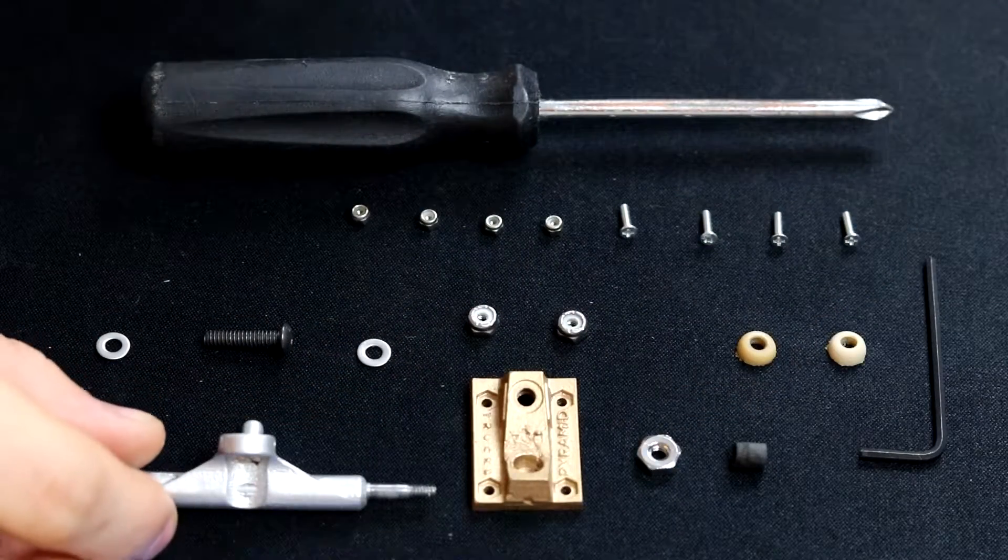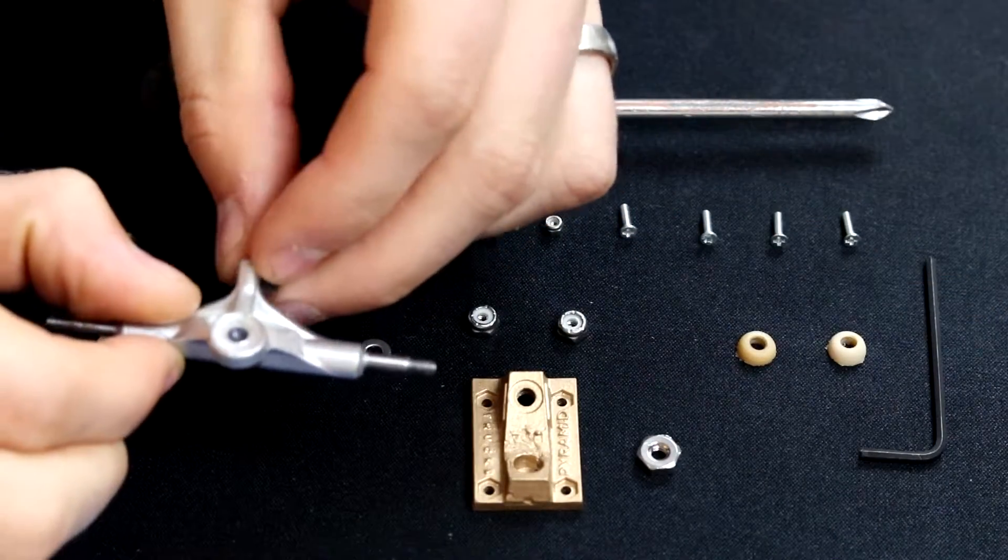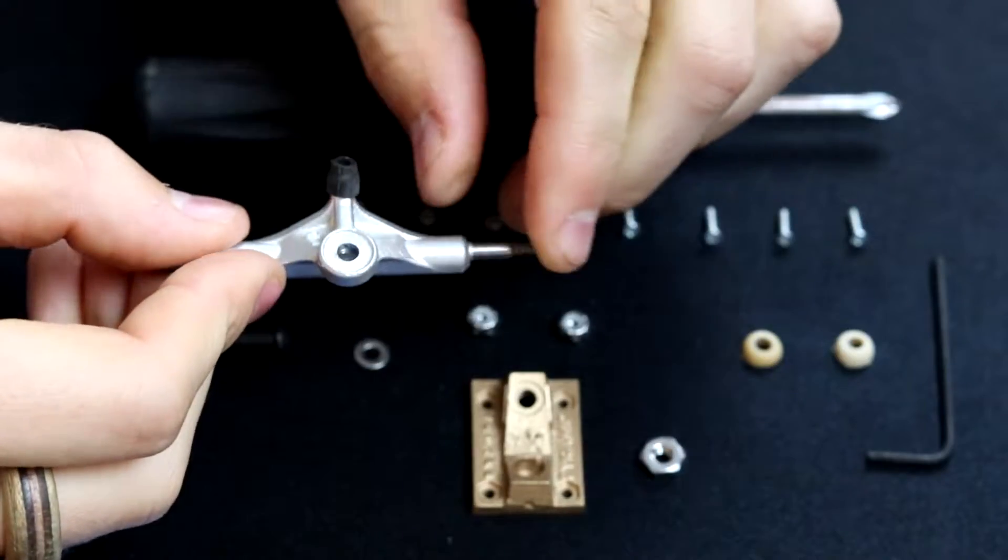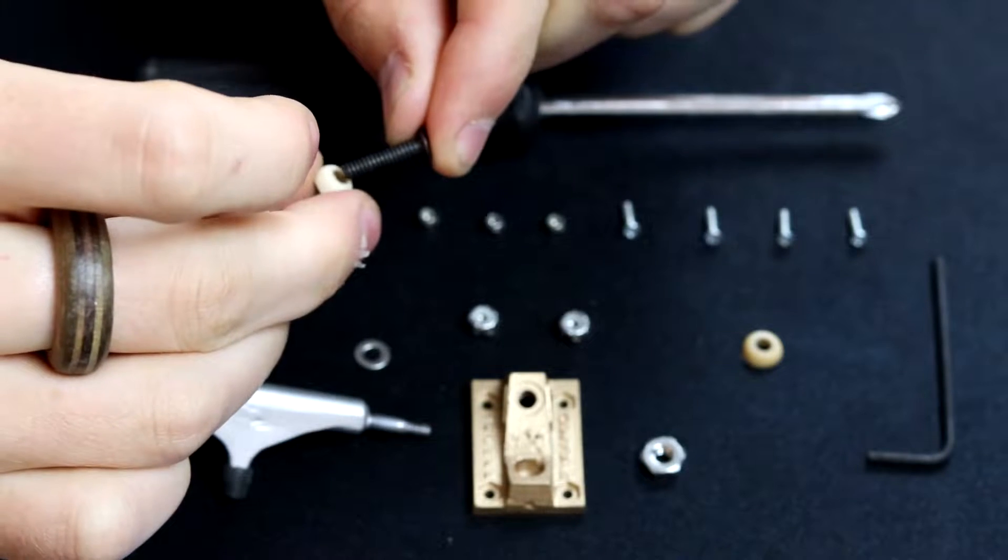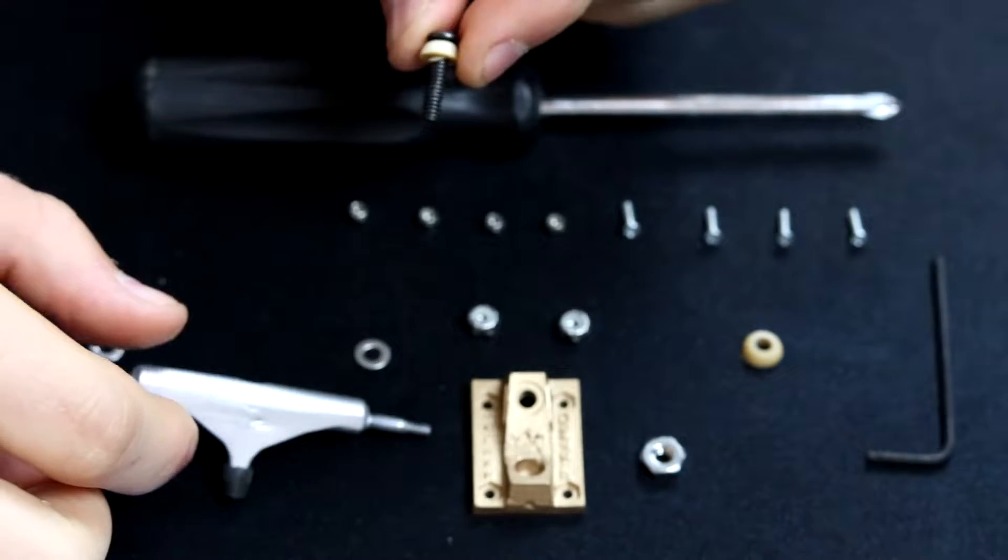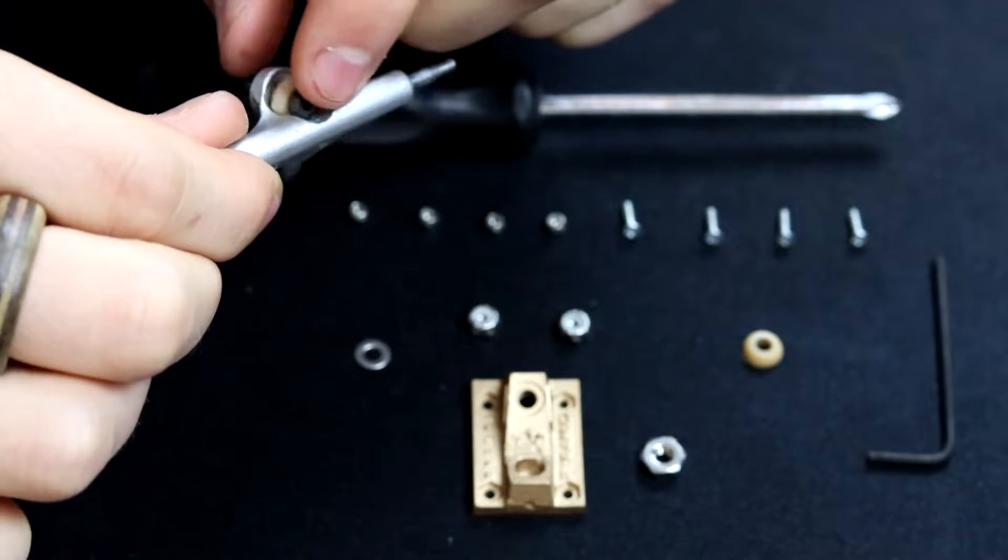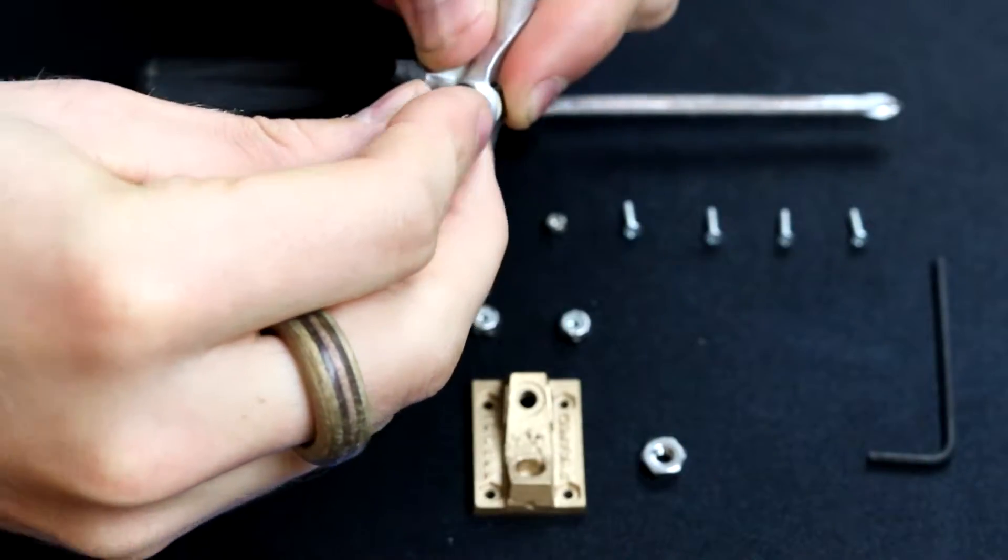Begin by placing the rubber tube onto the bottom of the hanger. Next, slide the top bushing through the kingpin bolt. Once it's on, place the bolt through the hole in the hanger and slide on the bottom bushing.